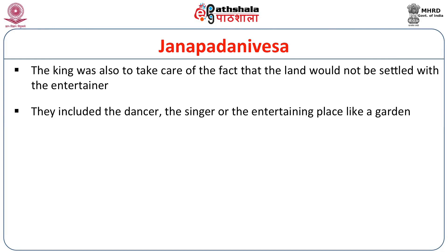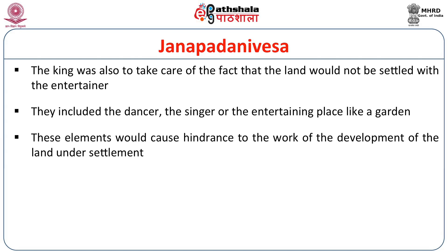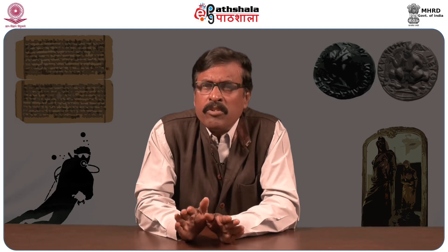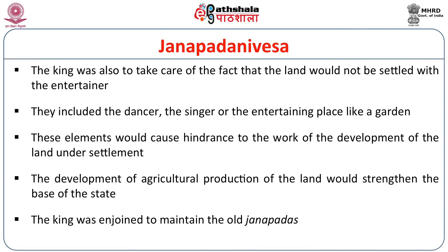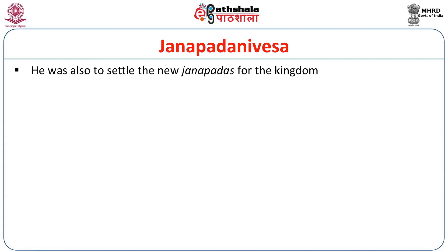Production work could not be disturbed by any means at any cost. In the beginning of land settlement, the king usually supplied cash, cattle, and seeds for the development of agriculture. The king was also to take care that the land would not be settled with entertainers — that is, dancers, singers, and entertainment places like gardens — as these elements would cause hindrance to the work of land development. The king was enjoined to maintain old Janapathas as well as settle new ones, because more and more production meant more and more resources for the interest of the kingdom.